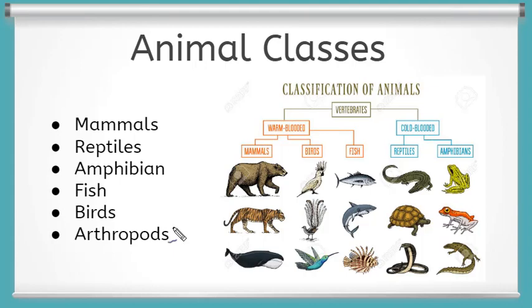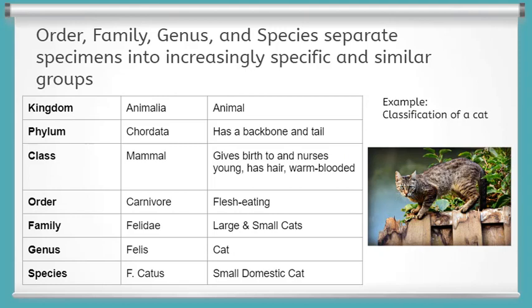For now, we are going to review what classification might look like for a specific species or animal. To do this, we will look at a cat more specifically. Cats are part of the animal kingdom. They are classified under the phylum Chordata, meaning they have a backbone with a tail. They give birth to and nurse their young, have hair on their body, and are warm-blooded and breathe through their lungs. This places them in the mammal class.